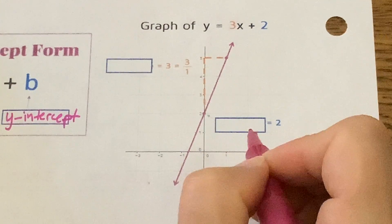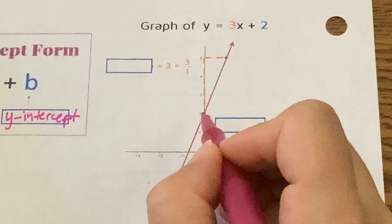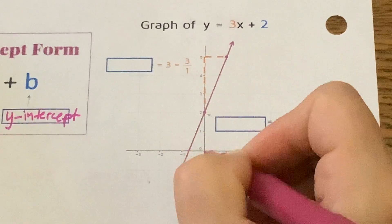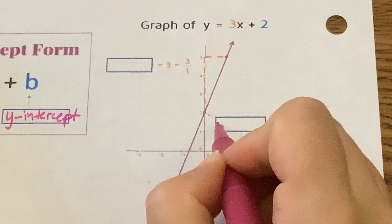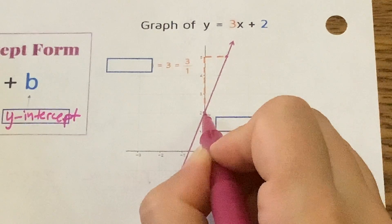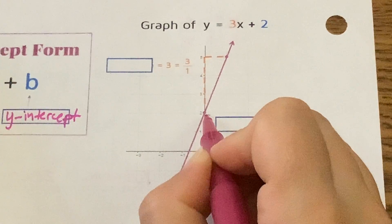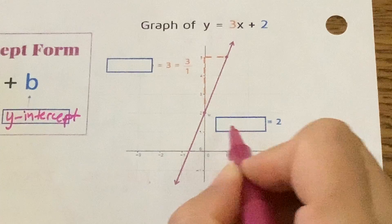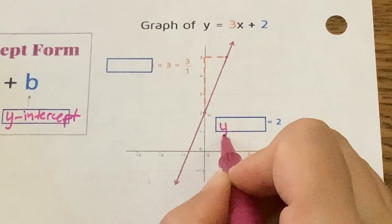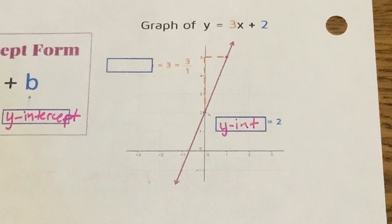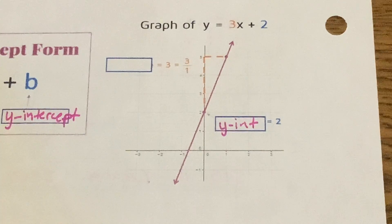All right, so they're showing us an illustration of where you get slope-intercept from. You see how this is the y-axis that's vertical? And they're pointing this blue box to this point here. Where is this crossing at? The two. And what is that? The y-intercept. The y-intercept is crossing at two.